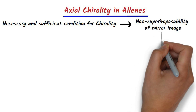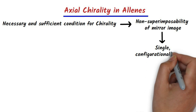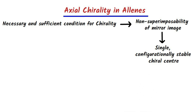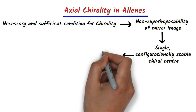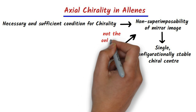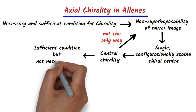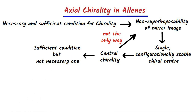This non-superimposability can be achieved if a molecule has a single, configurationally stable chiral center. We say such molecules possess central chirality. However, central chirality is not the only way to achieve non-superimposability of the mirror images. Thus we say, the presence of central chirality is the sufficient condition for a molecule to show chirality, but not the necessary one.